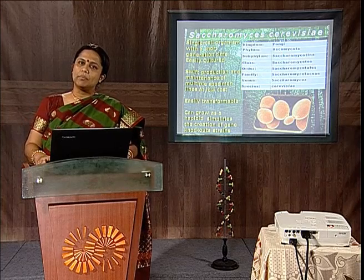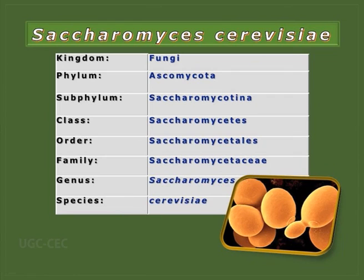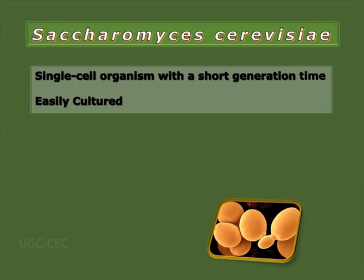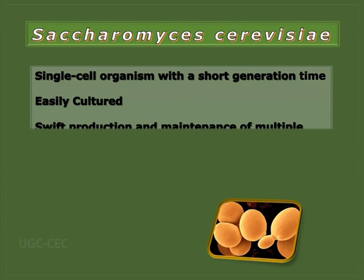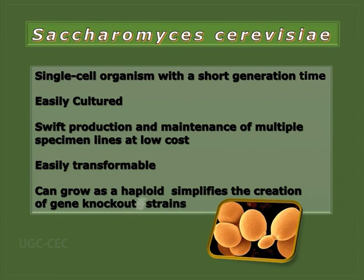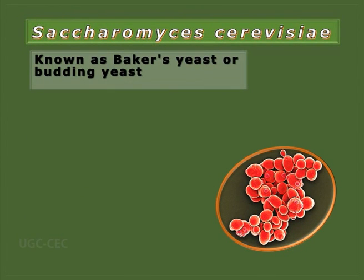The first name in the yeast community is Saccharomyces cerevisiae. It belongs to class Saccharomycetes, order Saccharomycetales, family Saccharomycetaceae, genus Saccharomyces, and species cerevisiae. It is a single-celled organism with a very short generation time, easy to grow in well-defined media, and easy to maintain under lab conditions. Most importantly, it is easily transformable — foreign genes can be introduced very easily. It can grow as a haploid, which simplifies the creation of gene knockout strains. It is also known as baker's yeast or budding yeast.